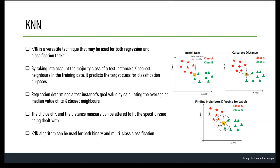Another approach for multi-class classification is the One-vs-One (OVO) method. Here, KNN is trained for each pair of classes. For three classes A, B, C, three KNN classifiers are trained: one for A vs B, one for A vs C, and one for B vs C. During prediction, the instance is classified based on the class with the highest number of votes from the three KNN classifiers.